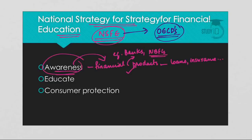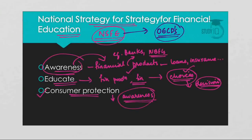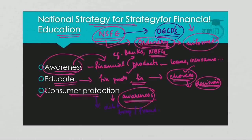The second aim of NSFE is to educate existing users on various financial products and services, which will help them make informed choices and influence their decision-making. The third aim is to ensure consumer protection — when consumers are aware of financial products and services, they can escape debt traps and fraud. In conclusion, by imparting financial literacy, NSFE aims to convert ordinary individuals into informed individuals who are able to question the financial services they consume.